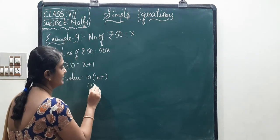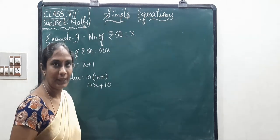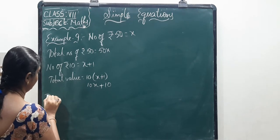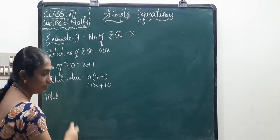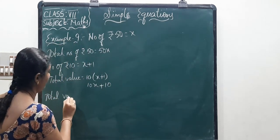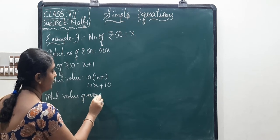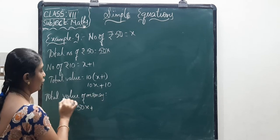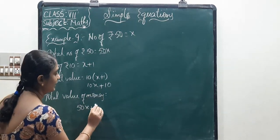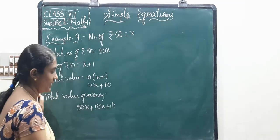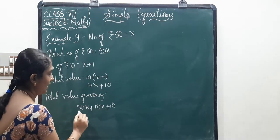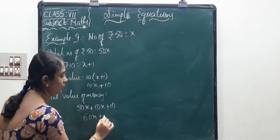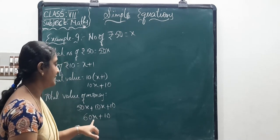Expanding: 10 into (X plus 1) equals 10X plus 10. So the total value of money equals 50X plus 10X plus 10. Adding the X terms: 50X plus 10X equals 60X. Therefore total value of money equals 60X plus 10.